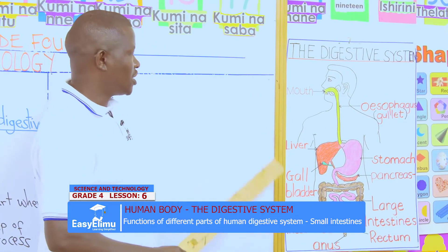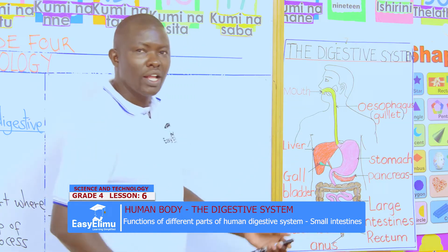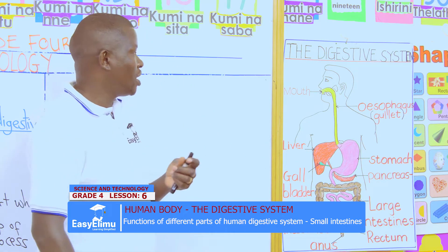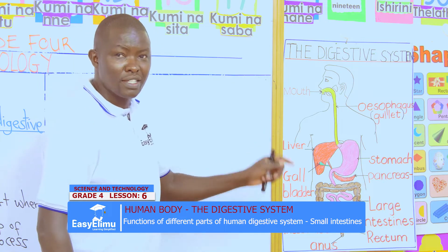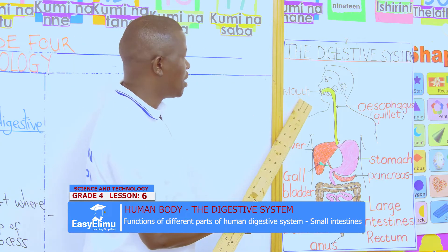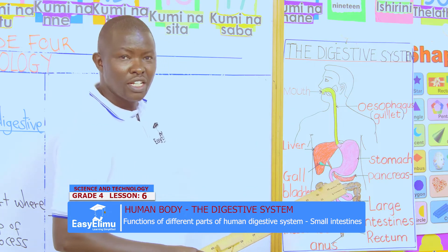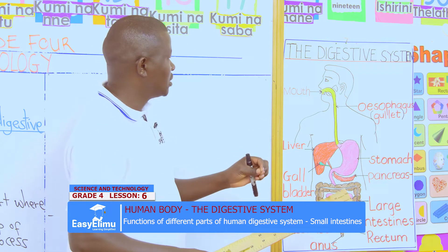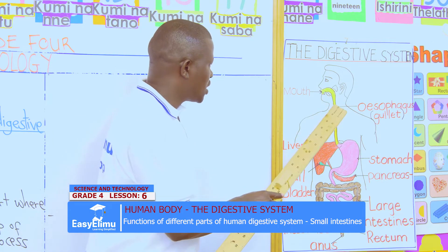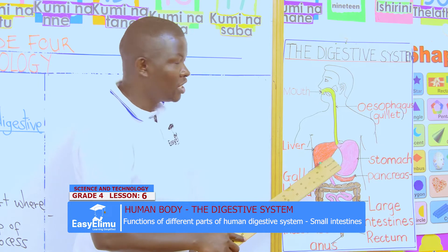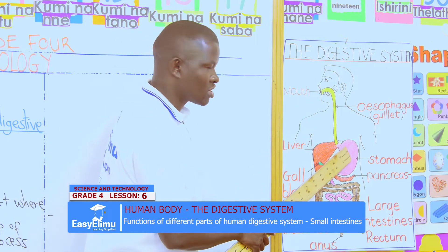We said digestion of food and muscle starch begins at the mouth. Once we put the food in our mouth, the food is broken down to small particles which are rolled and compacted together, joined by the saliva to form boluses which go down the oesophagus in a movement we call peristalsis, all the way down to the stomach.